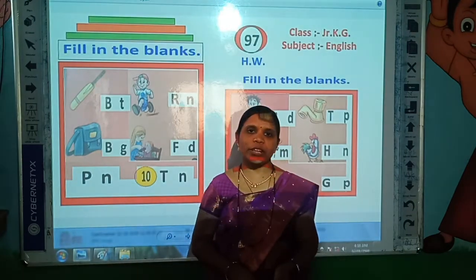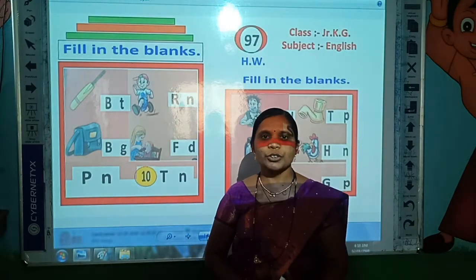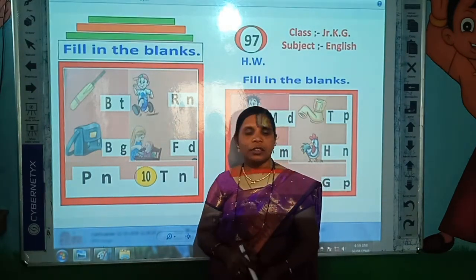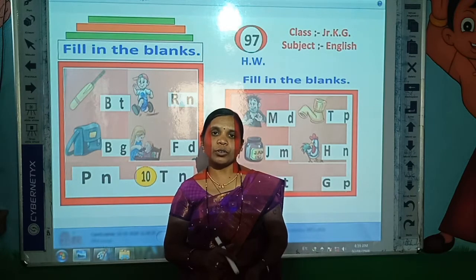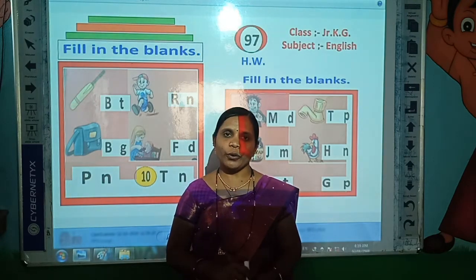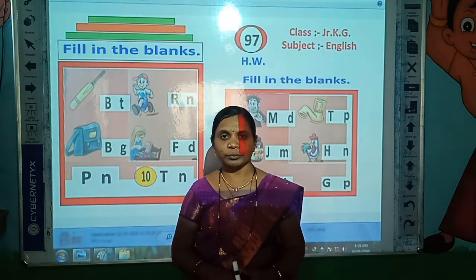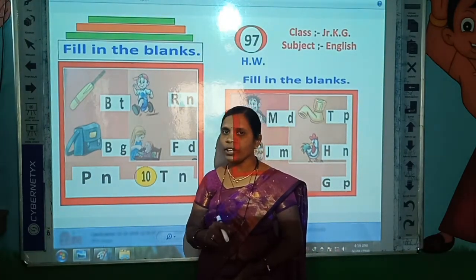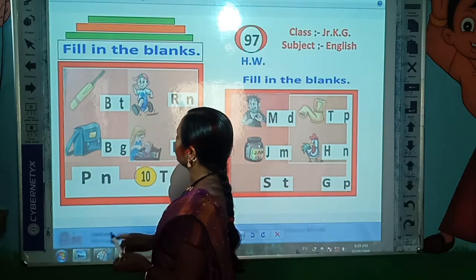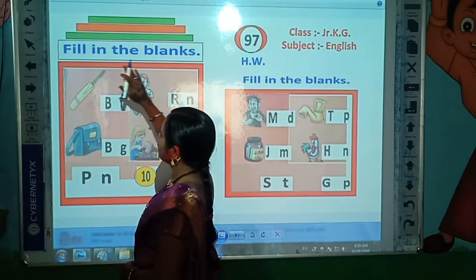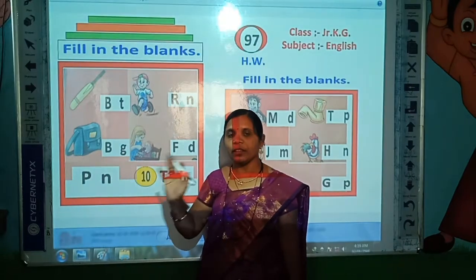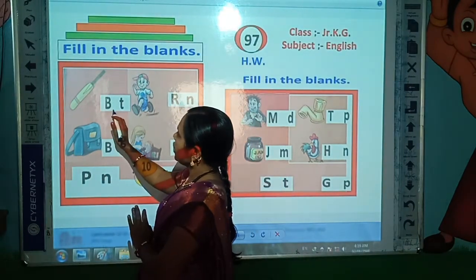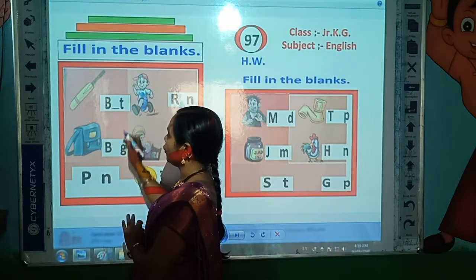Hello children, welcome to online English class for junior grade. In the previous period, we learned the sound of A, sound of E, sound of I, sound of O, and sound of M words. So today we take one small activity: fill in the blanks. First, look at the picture, then fill in which letter is missing and write that letter. Okay?